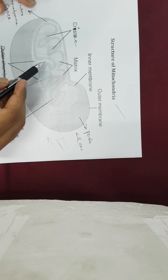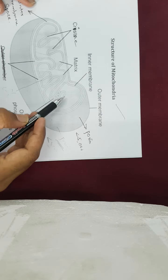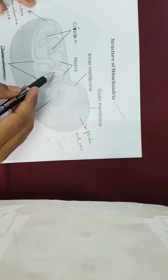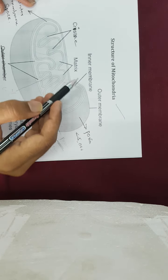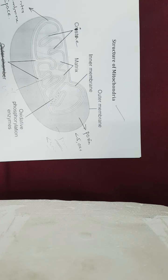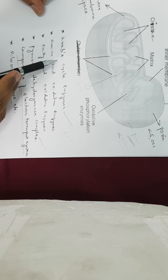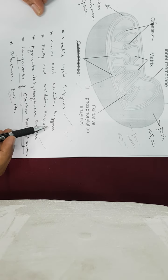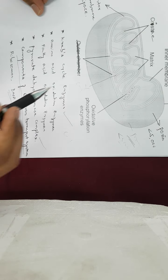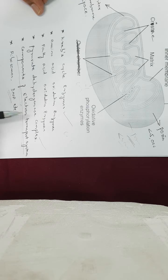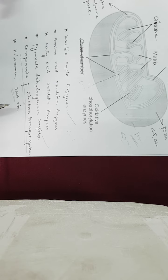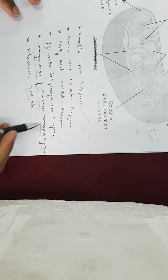The inner membrane has many involutions called cristae. The inside of the mitochondria is called the matrix. The mitochondria contains enzymes for the Krebs cycle, amino acid oxidation enzymes, fatty acid oxidation enzymes, and the enzyme complex called pyruvate dehydrogenase complex. Very importantly, the components of the electron transport chain are also present in the mitochondria.